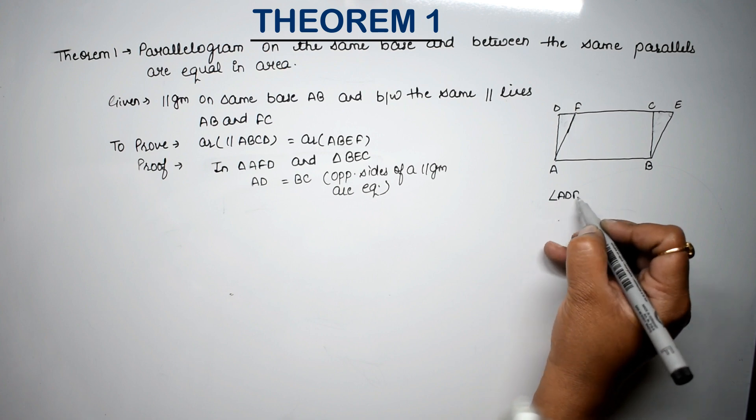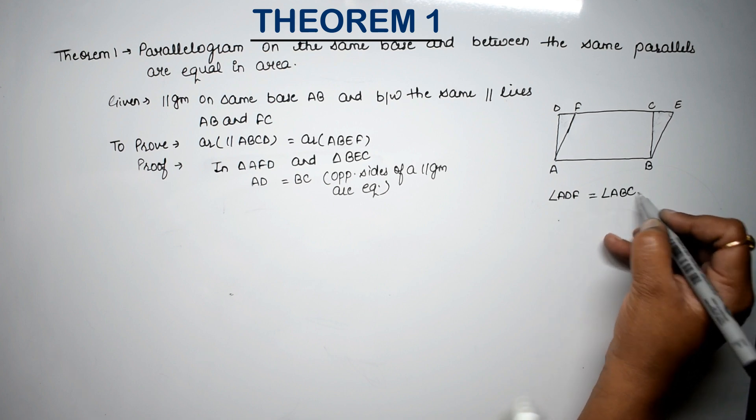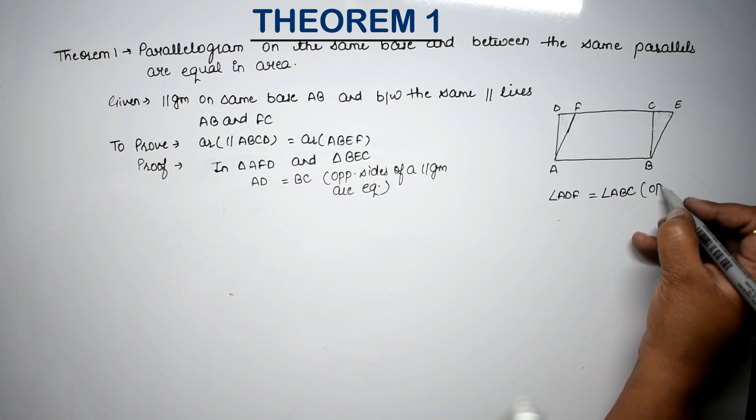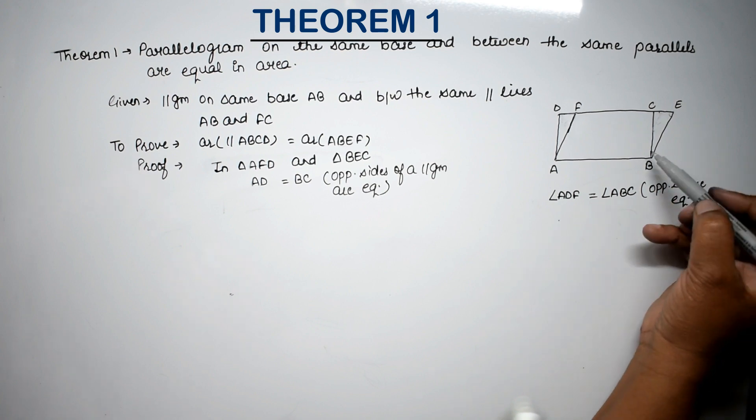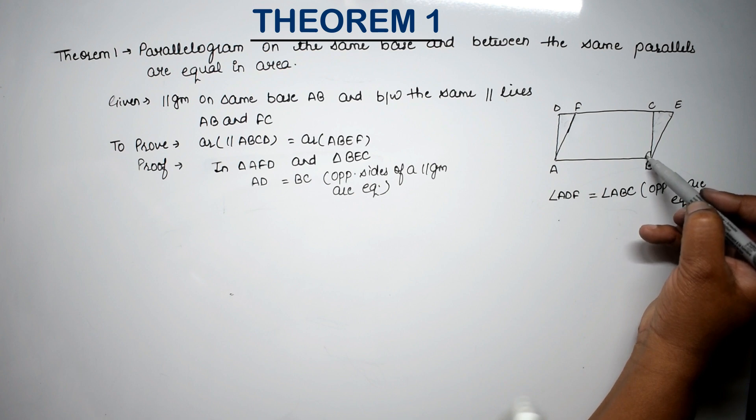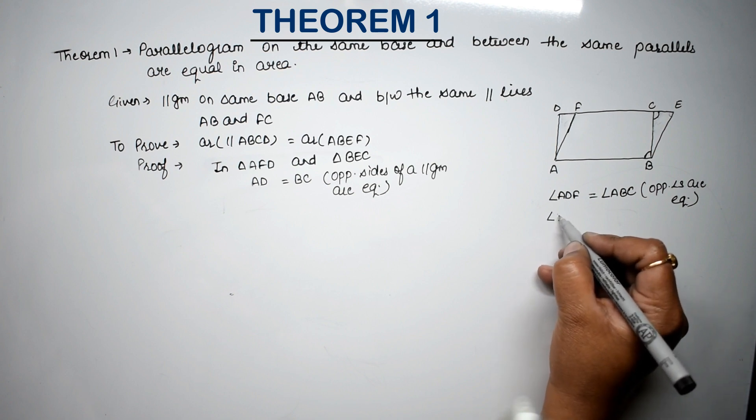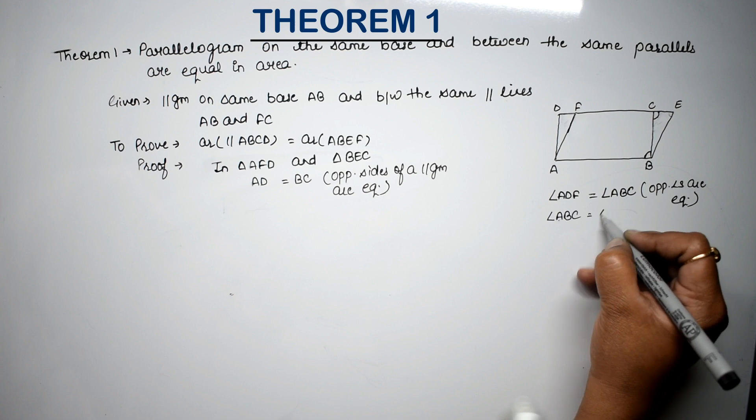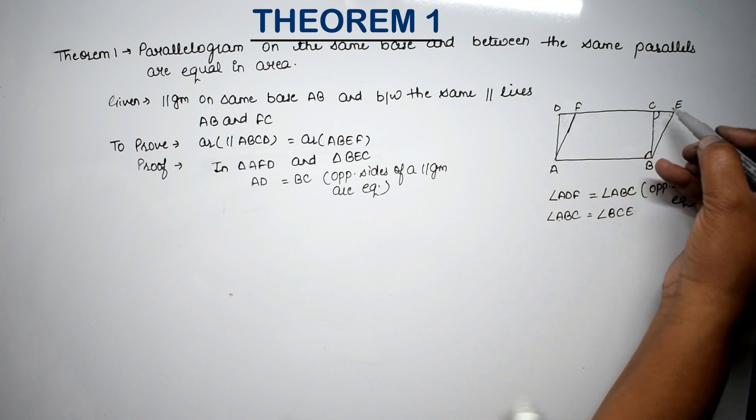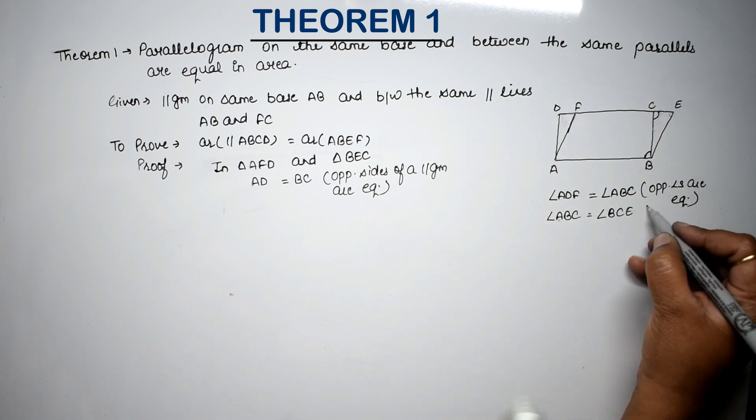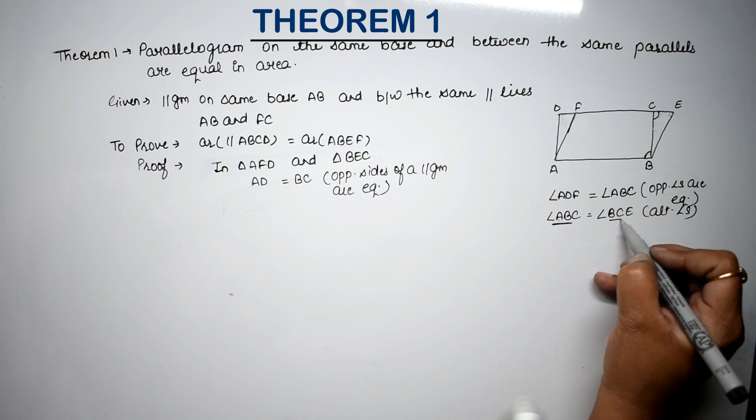Now what can we prove other things? Please prove us. Angle ADF, ADF is equal to angle ABC. Why? Because opposite angles are equal. Are equal. Right? But this angle is equal to this angle.